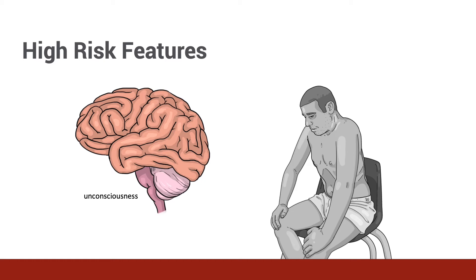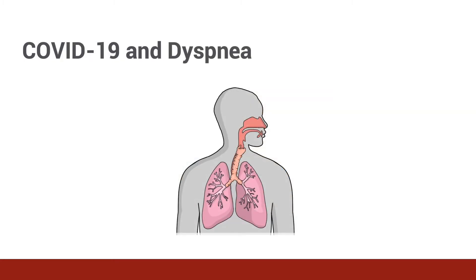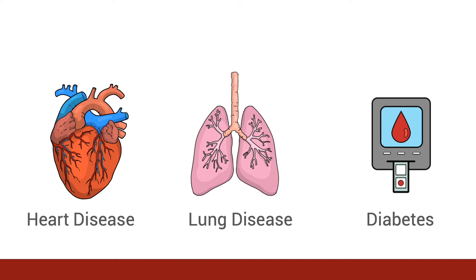High-risk features require immediate intervention. Once we've completed our general impression and ABCs and intervened on any abnormalities, we are now able to focus on the history. History is incredibly important; however, for sick patients, history should not delay treatment and important diagnostics. A complaint of shortness of breath can predict more serious lung injury in patients diagnosed with COVID-19. Past medical history of heart disease, lung disease, and diabetes has been associated with more severe cases of COVID-19.